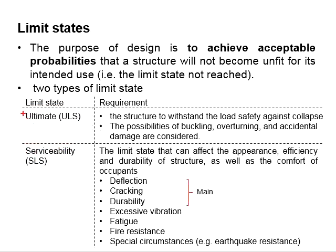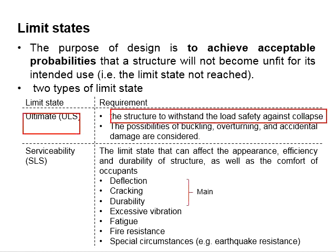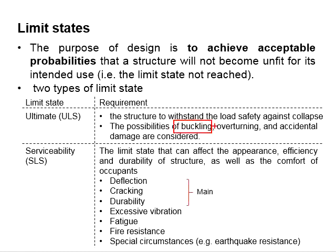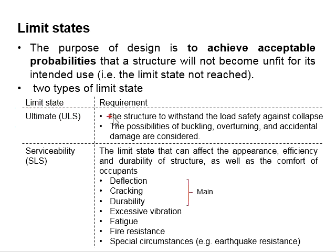The ultimate limit states require the structure to withstand the load safely against the collapse of the structures. It also considers the probability of the member undergoing buckling, overturning, accidental damage, and so on. As long as the ultimate limit state is not achieved, the structures will not collapse and can be used to withstand load safely.